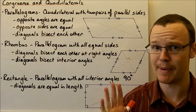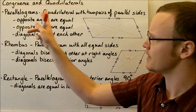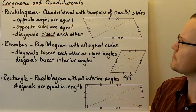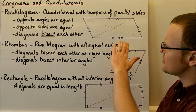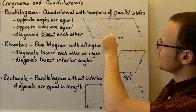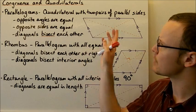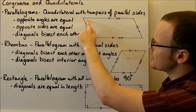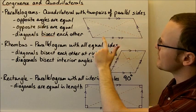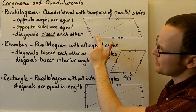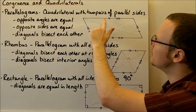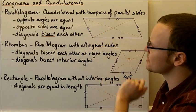The first we're going to look at is a parallelogram. A parallelogram is a quadrilateral with two pairs of parallel sides — these two sides are parallel and these two sides are parallel. The opposite angles are equal, so this angle here is equal to this angle here, and that angle is equal to that angle there. The opposite sides are equal: this side and this side are equal, and this side and this side are equal.